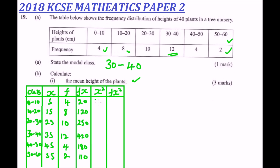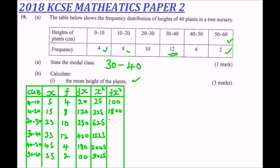Next we square each midpoint: 5² = 25, 15² = 225, 25² = 625, 35² = 1225, 45² = 2025, and 55² = 3025. Then we multiply frequency by X squared (FX²): 4 × 25 = 100, 8 × 225 = 1800, and 10 × 625 = 6250.